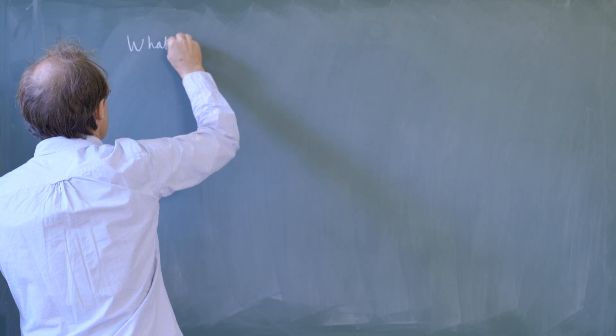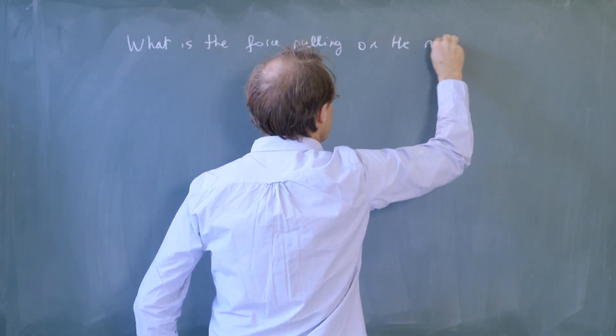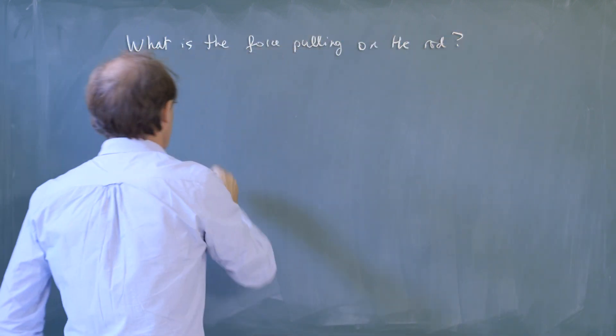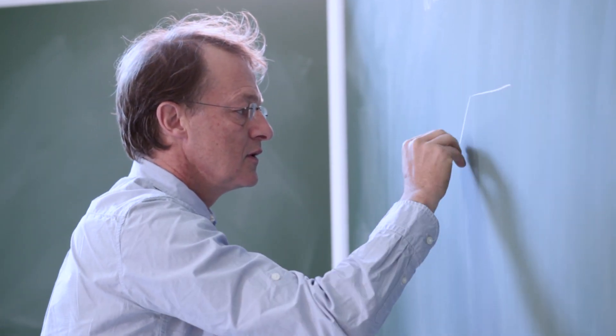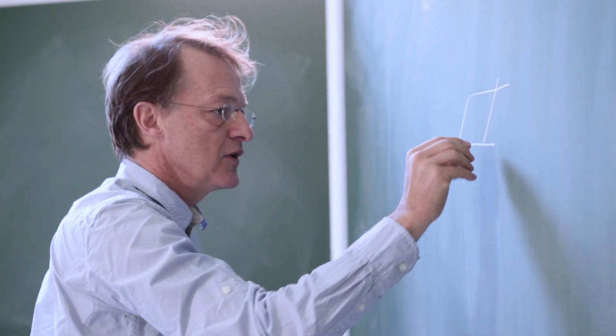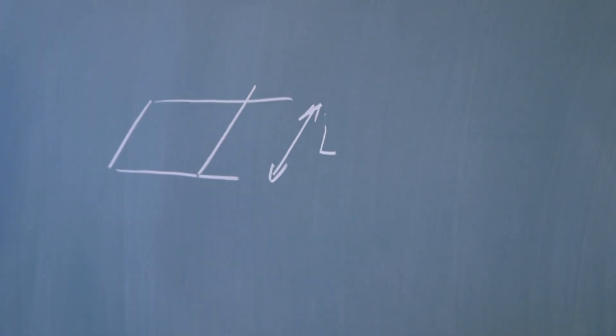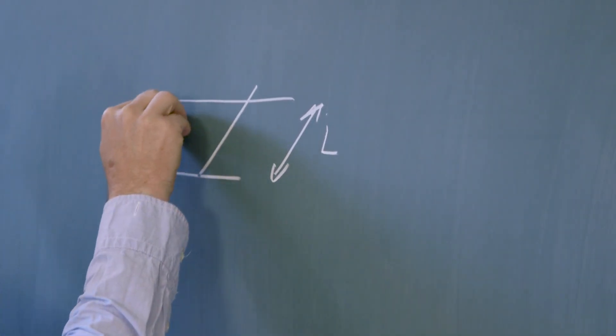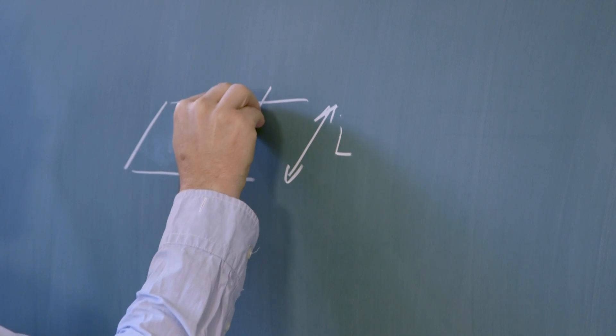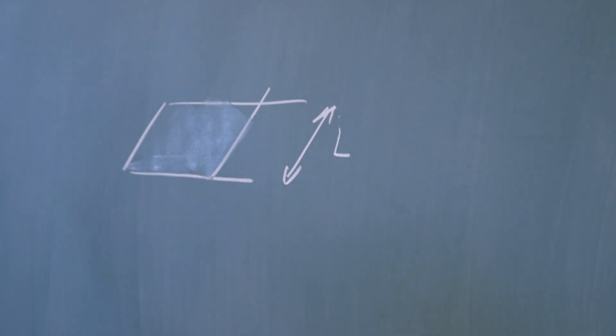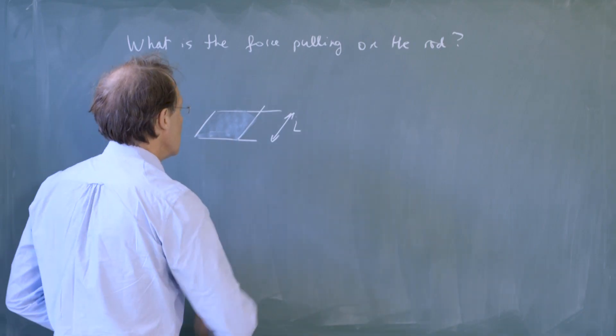So what is the force pulling on the rod? We have the frame which is like this, the rod is there, the typical width of the frame is L, and it is filled with a soap film.